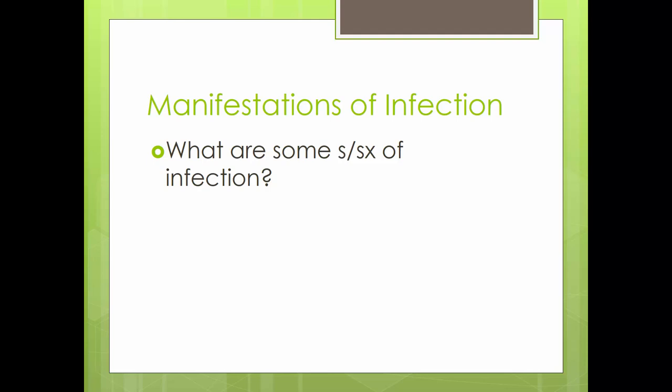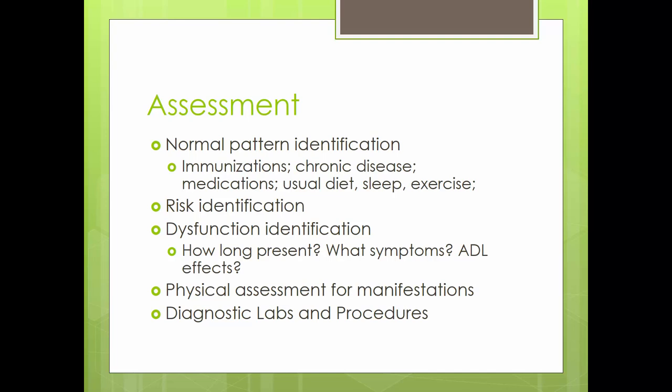Take a few minutes to think about signs and symptoms of infection you might see in your patients. The first step in the nursing process is always assessment. We look for normal pattern identification — ask about normal measures taken to stay well. We look for risk identification such as exposure to illness, smoking, drugs, and sexual practices. During the physical assessment, perform a general inspection, check vitals, listen to lungs and bowel sounds, and feel lymph nodes. Early recognition of SIRS via physical assessment is key to improving mortality rates.